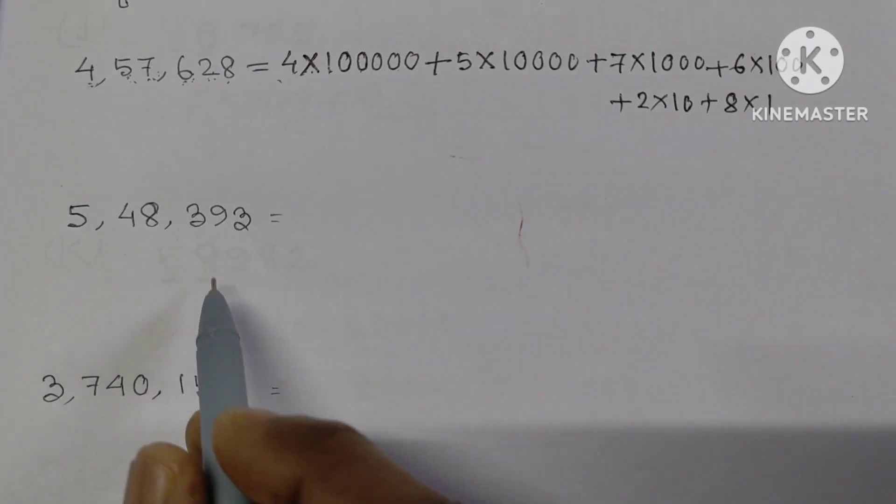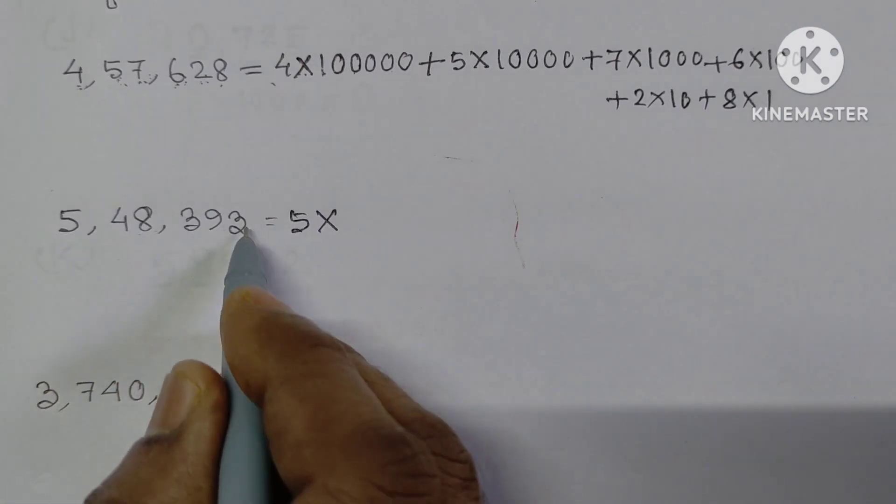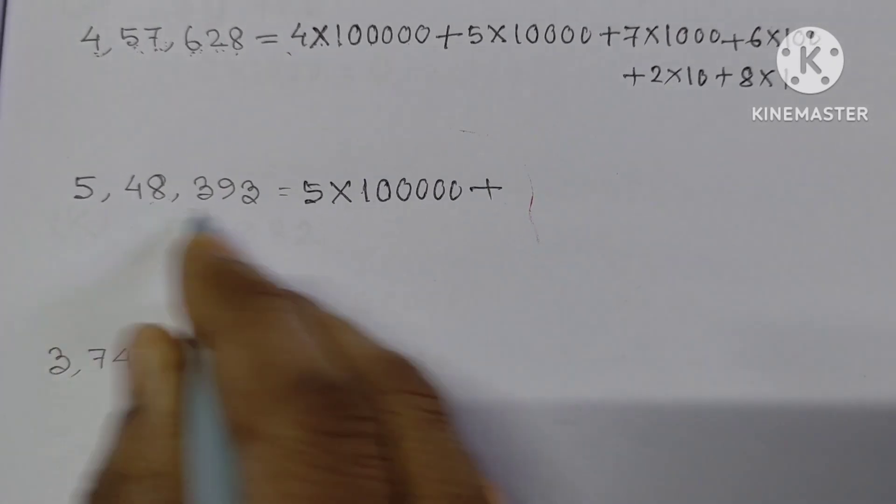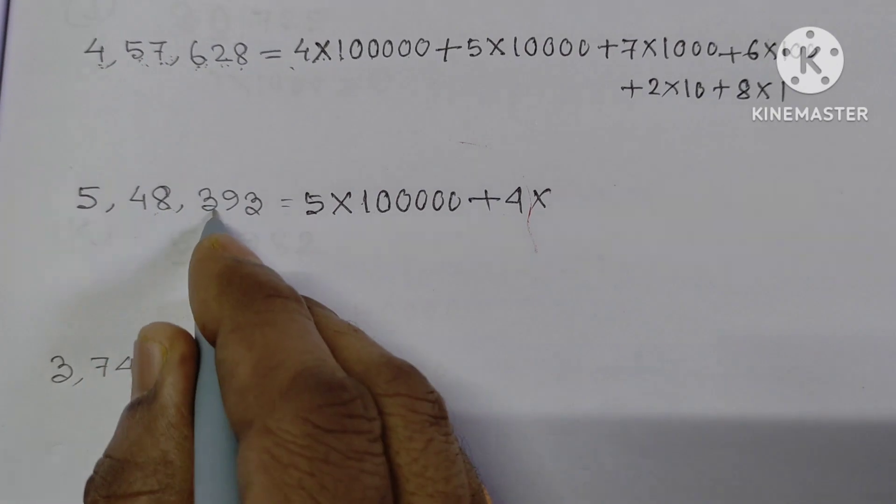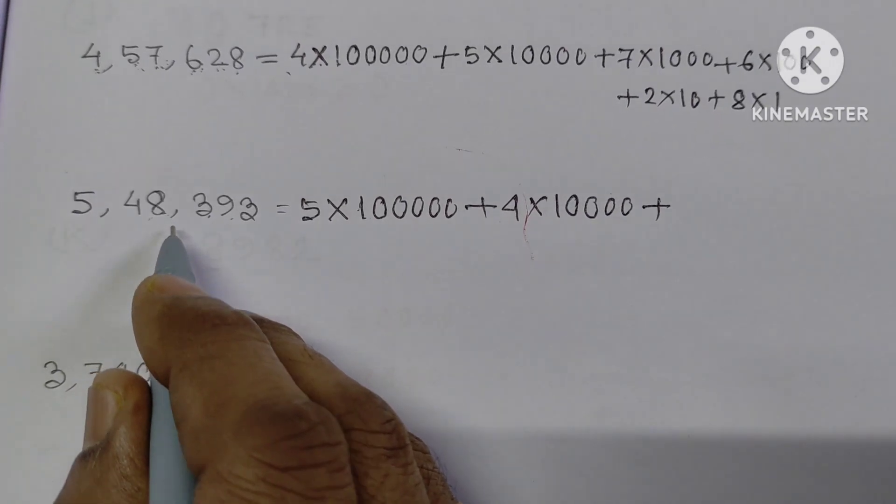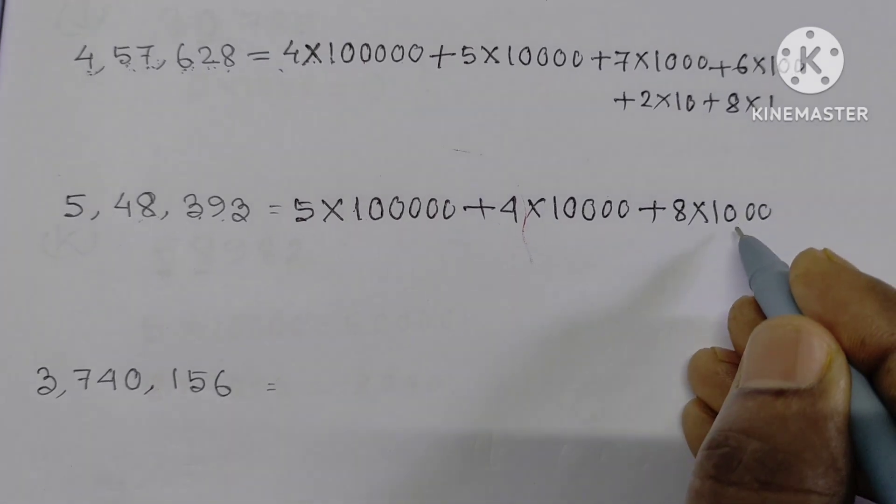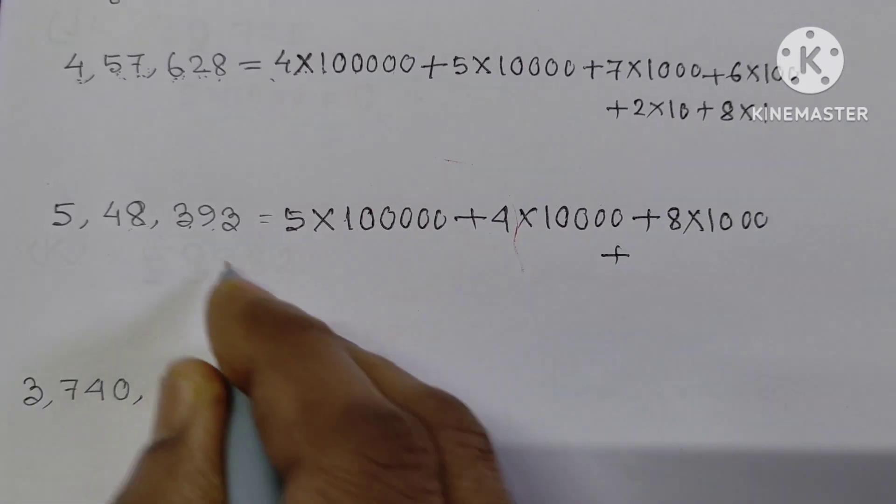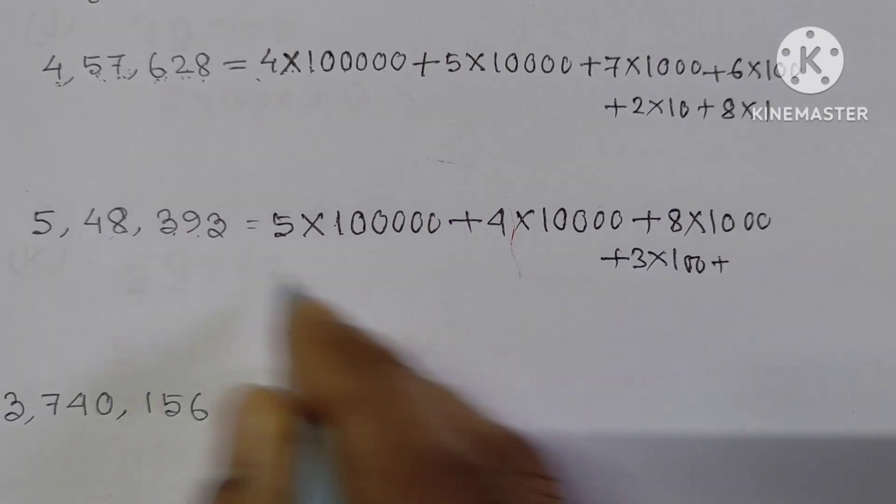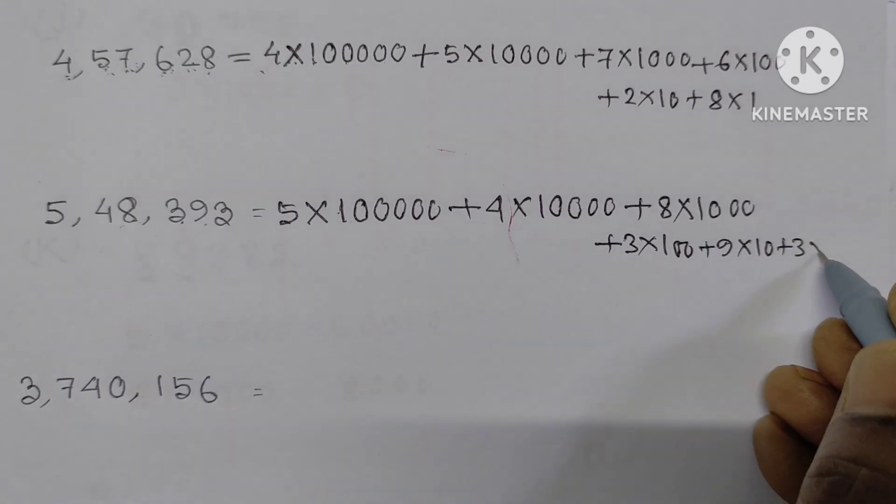Next one: 5,48,393. This is 5 into 1 lakh plus 4 into 10,000 plus 8 into 1,000 plus 3 into 100 plus 9 into 10 plus 3 into 1.